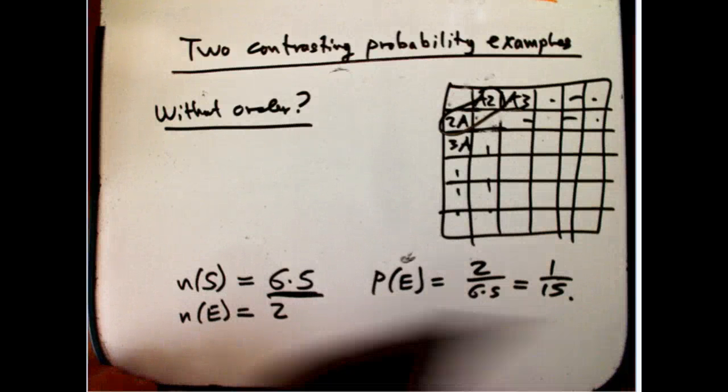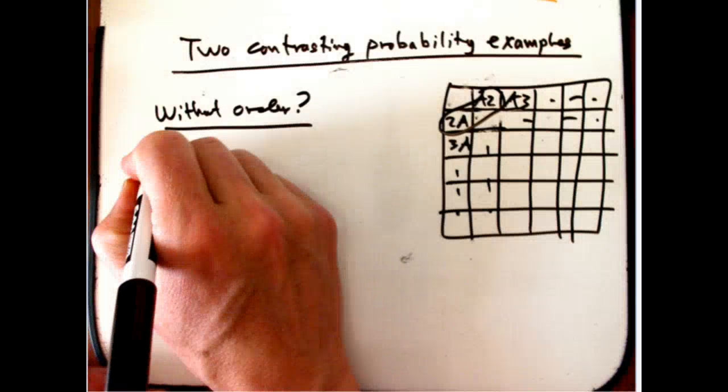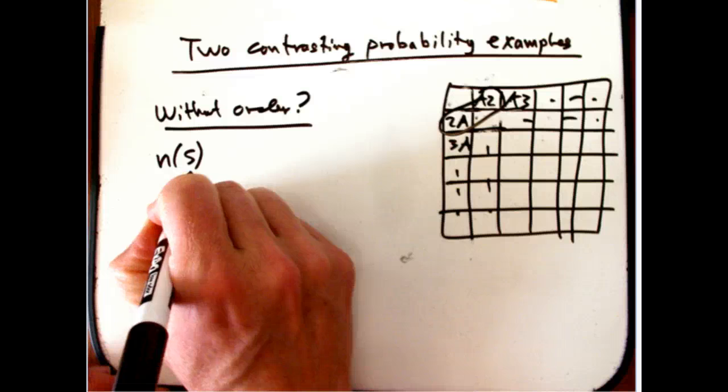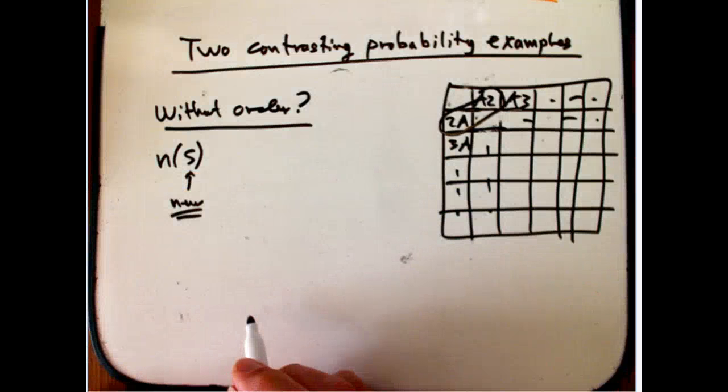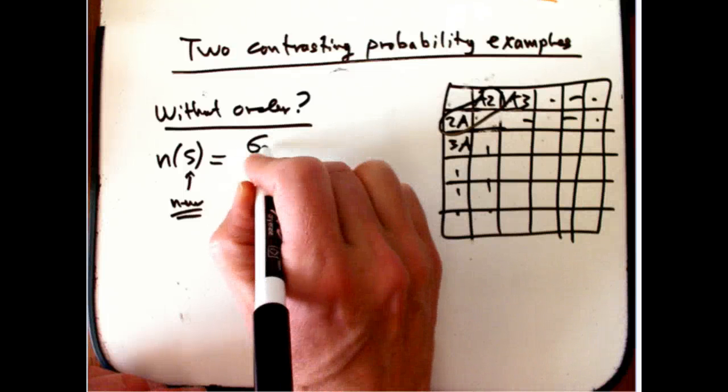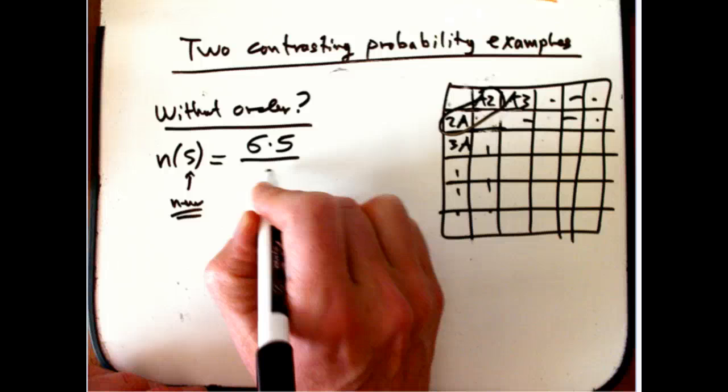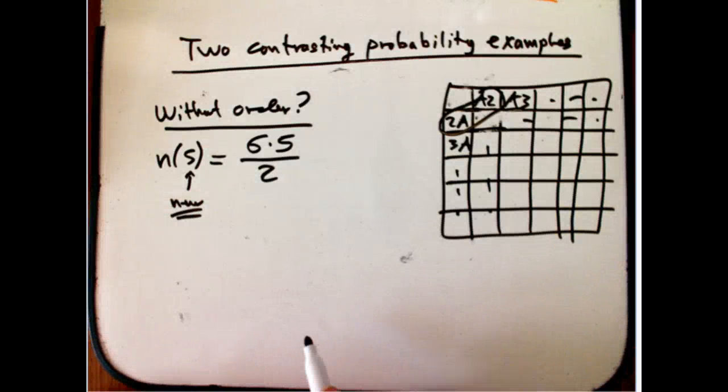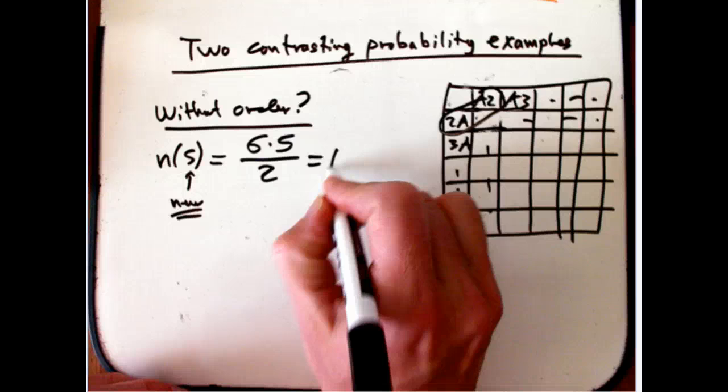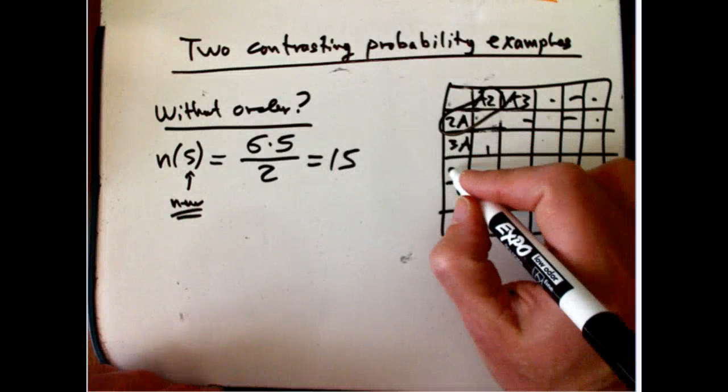So now, the number in the new sample space, where we count these guys without order, is... There's a choice for the first... Six choices for the first card, five choices for the second card. But then, I divide by two to take into account that I don't care about the order. That's fifteen. What that does, and this is really crucial here...